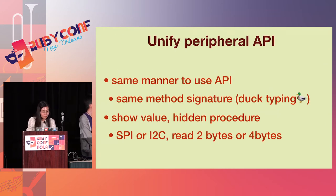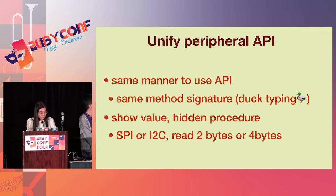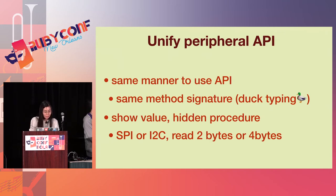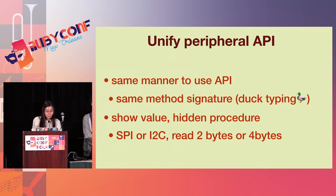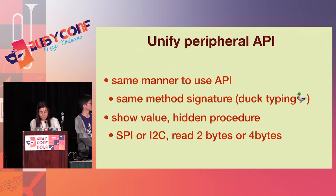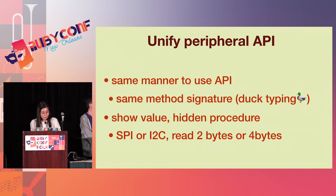How about the MRuby API for application authors? We would like to use APIs in the same manner — Ruby APIs for similar functions should have similar method signatures. Another requirement is high-level protocol: users should not need to know about I2C or SPI, or whether to read 4 or 6 bytes.